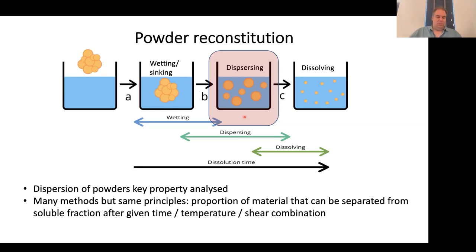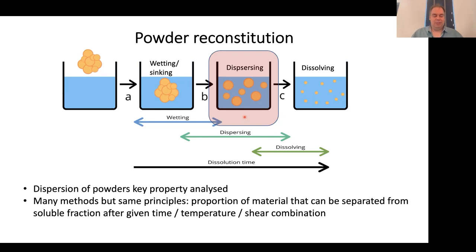There are many methods to look at dispersibility, but they all essentially use the same principles. We're always looking at a proportion of material that can be separated from a soluble fraction after a given combination of time, temperature, and shear. That insoluble or non-dispersed fraction can be separated by centrifugation, filtration, sieving, or other means — but pretty much always, that is the basis of what we're measuring.